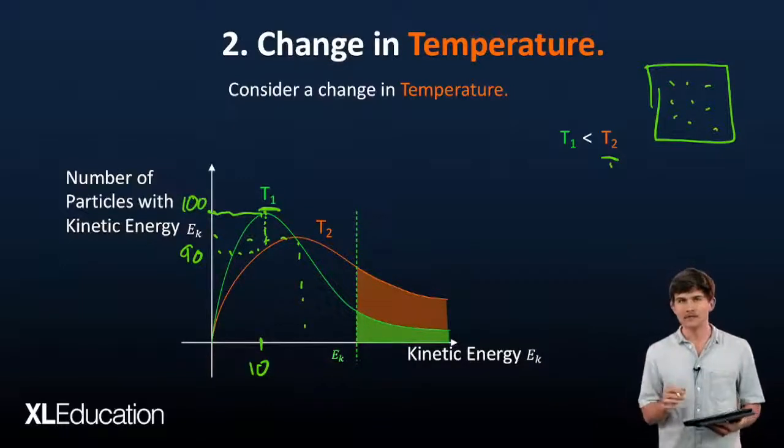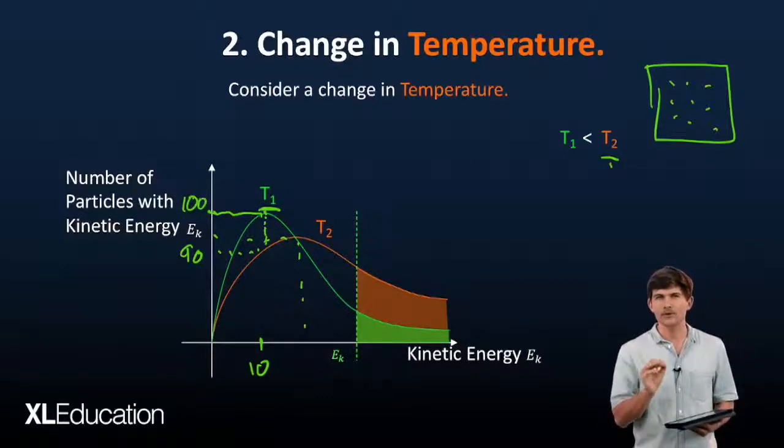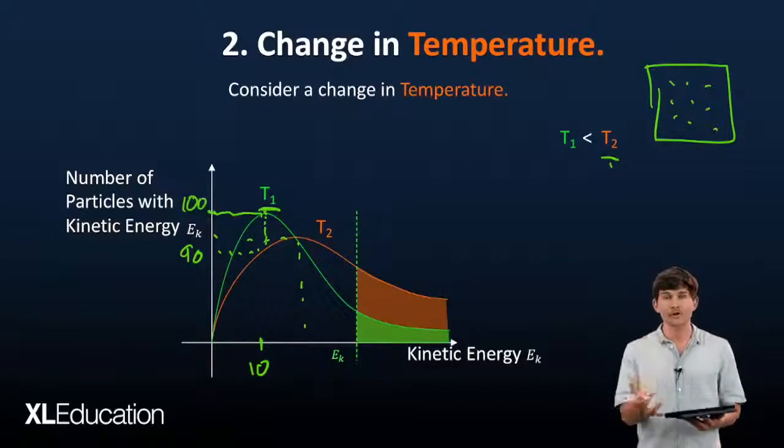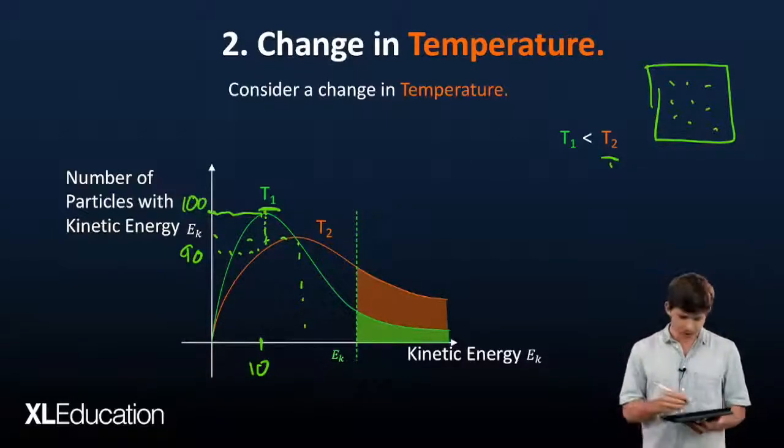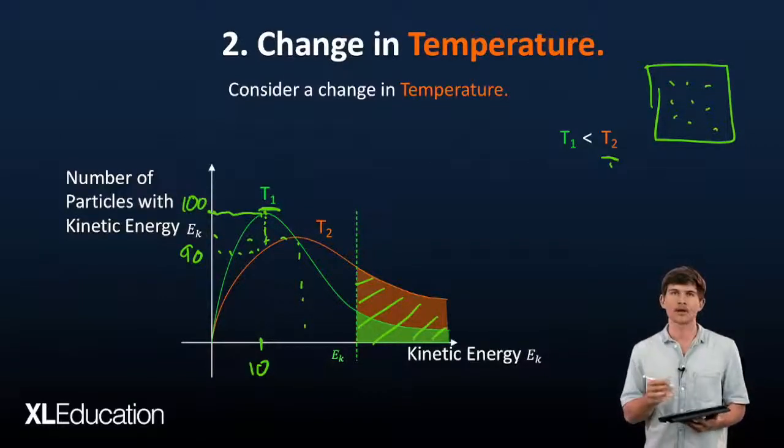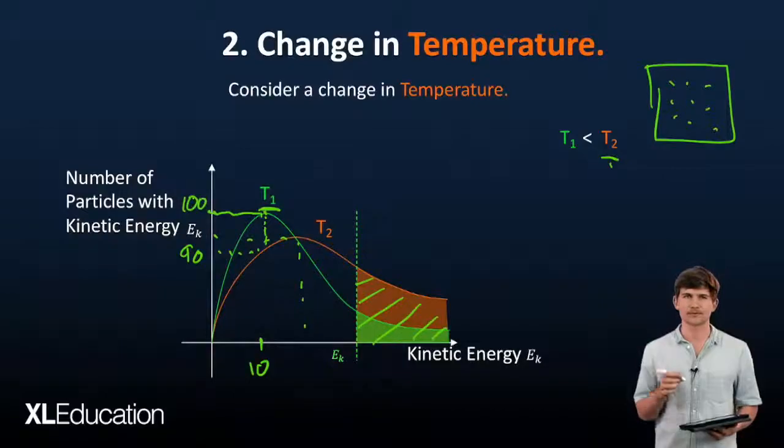Remember, an increase in temperature increases the rate of reaction. The Boltzmann curve gives us graphical evidence to that point. All these particles can now undergo an effective collision. Let's look at the next possible type of change: concentration.